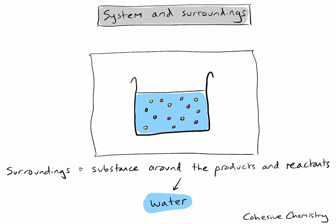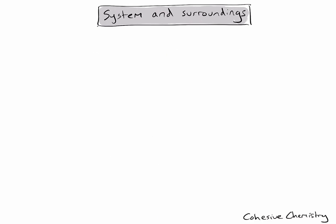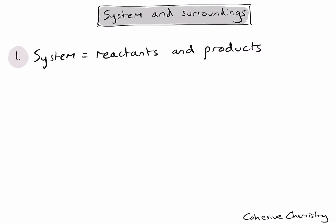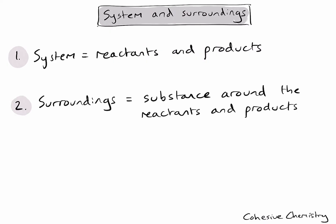So let's now consider the key points from this video. From a chemist's perspective, the system is defined as the reactants and products in a chemical reaction, and the surroundings is the substance that is around my reactants and products. This might sometimes be air and it might sometimes be water. If you found this video helpful, you might check out some of the other cohesive chemistry videos, perhaps even subscribe to the channel.